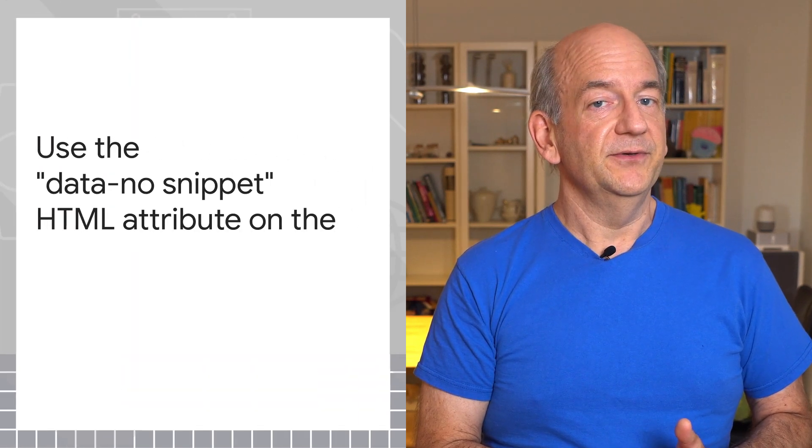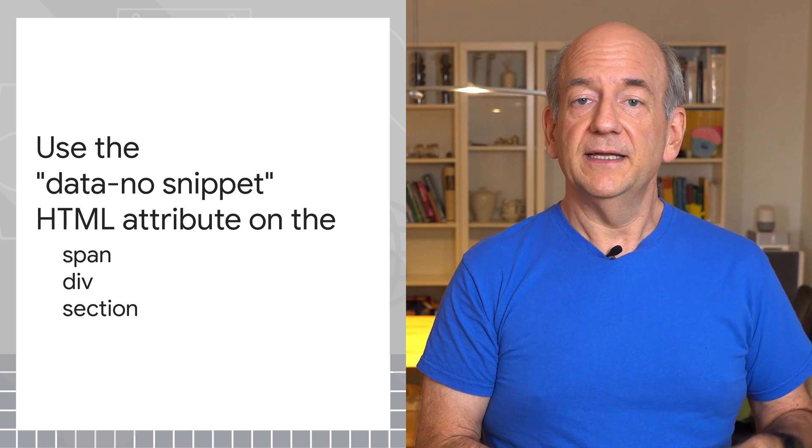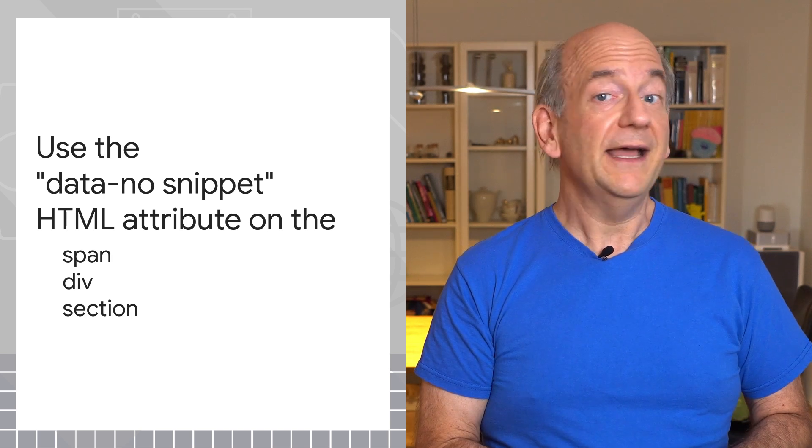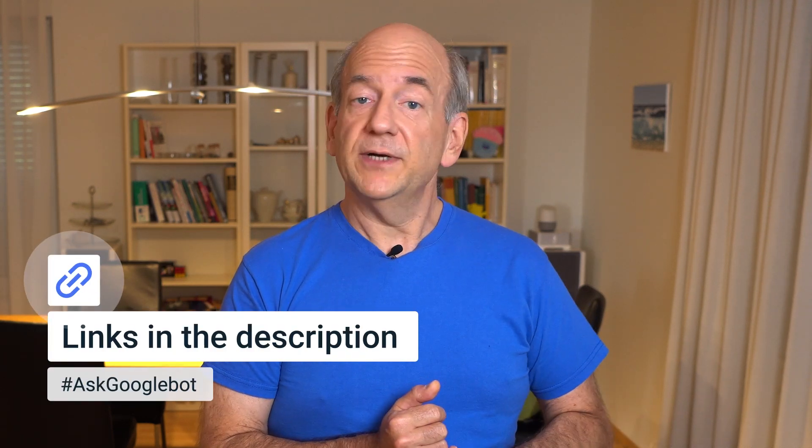Recently, we introduced a way to let us know about text you'd like to exclude. It's called the data-no-snippet attribute. You can apply this to specific HTML elements, and we'll then know not to show that text within the snippet. We have to re-crawl and re-process the page to find that, so it won't be immediately changed. There's more about this attribute as well as about other meta tags to control snippets in our Search Developers documentation, which is linked in the description.